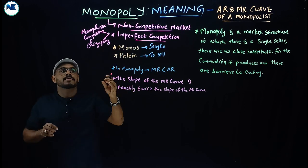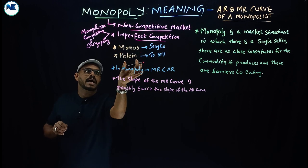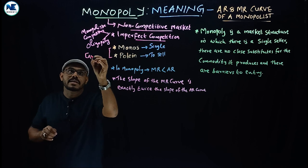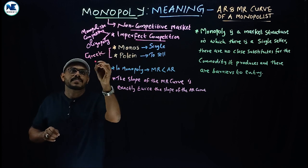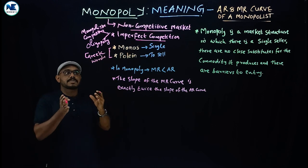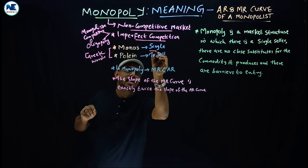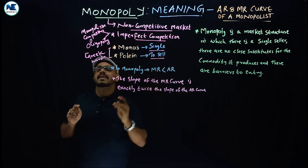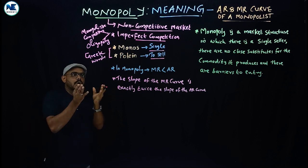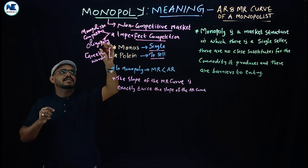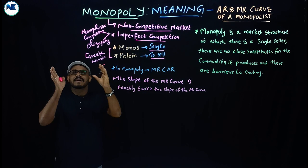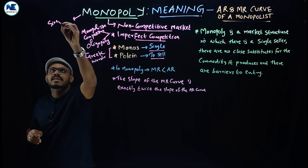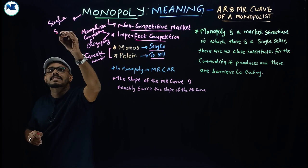Monopoly is actually derived from two words — Monos and Polein — both derived from Greek words. Monos means single, or alone, or all. And Polein means to sell. So Monos and Polein together result in monopoly, which means single seller — a single seller who dominates the market.